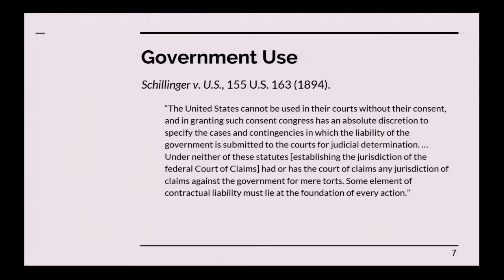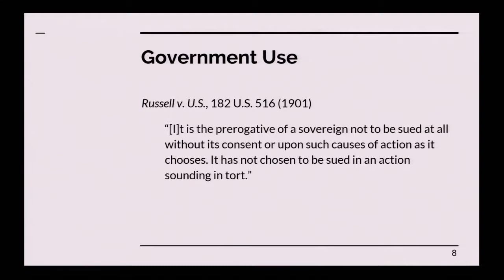In 1875, there was a renovation of the U.S. Capitol. Frederick Law Olmsted was the architect of the Capitol at the time, and his contractor used a patented method for pouring concrete. The patent holder, named Schillinger, sued the United States government for infringement of that patent. The Supreme Court held that the statutes allowing for suit against the U.S. government as a waiver of sovereign immunity did not allow for tort suits, so Schillinger could not sue the U.S. government. This was affirmed in 1901 in Russell v. U.S., where the court explicitly said it is the prerogative of a sovereign not to be sued at all without its consent, and that a patent infringement suit would be a tort suit.